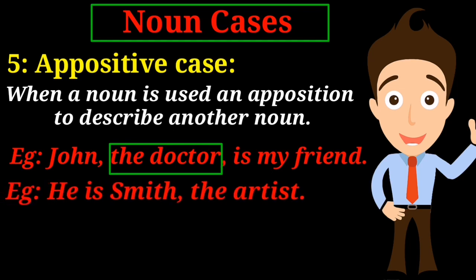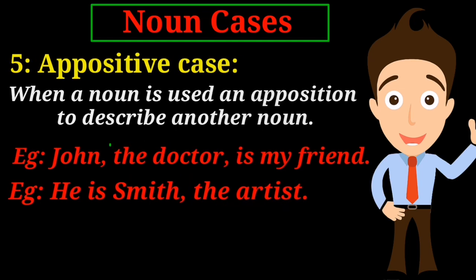Another example: 'He is Smith, the artist.' Again, Smith and the artist are two nouns, but the noun 'artist' describes the noun Smith, so the noun 'artist' is the appositive case of a noun.